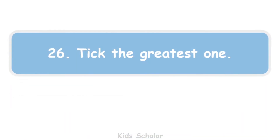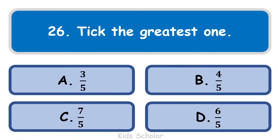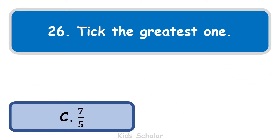Next question is: tick the greatest fraction. The options are 3 by 5, 4 by 5, 7 by 5, and 6 by 5. All the fractions have the same denominator, so the fraction with the greatest numerator is the greatest. Therefore, 7 by 5 is the greatest.